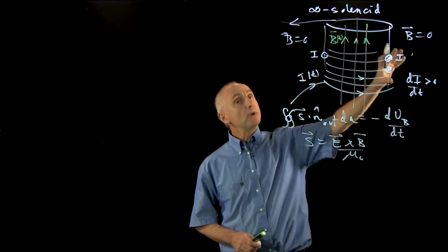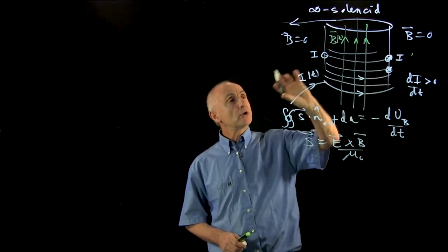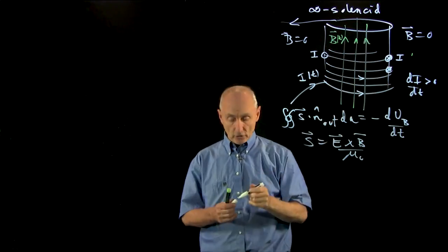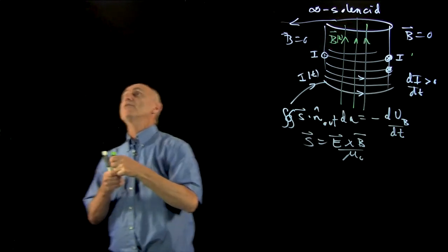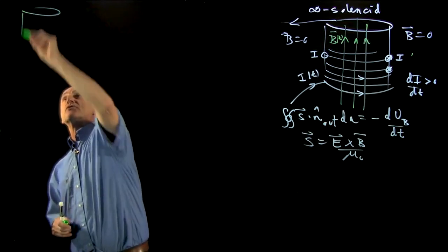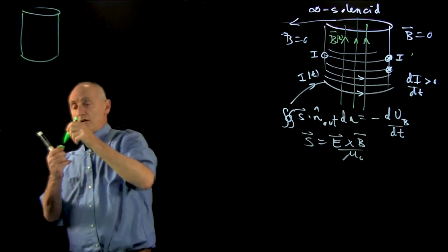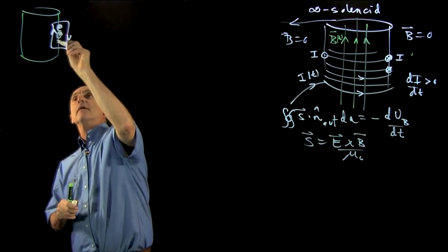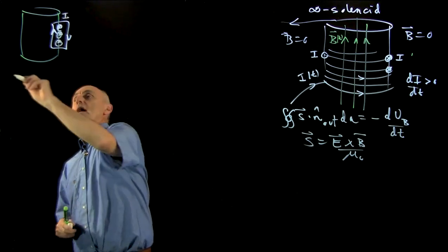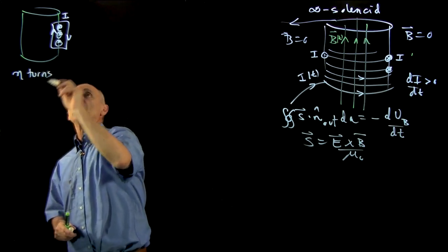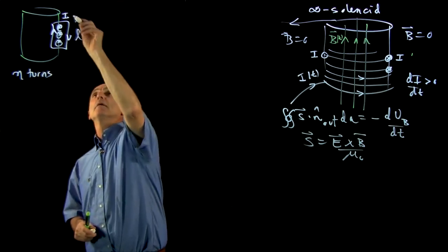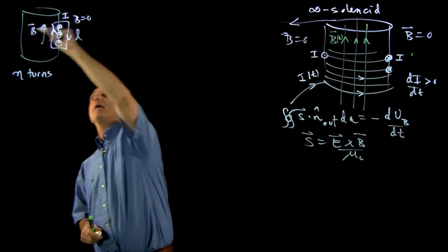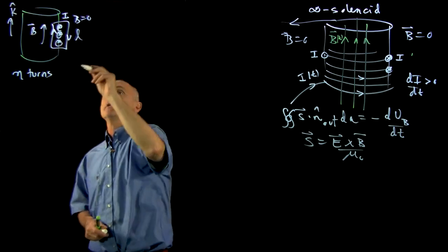For B, we'll use Ampere's law, where we're considering only very slowly changing currents. For the electric field, we'll use Faraday's law. Let's remind ourselves how we do the Ampere calculation. Let's sketch our solenoid here and choose our Ampere loop like this. We have our current and n turns per unit length. If we make that a length L, B is zero on the outside.